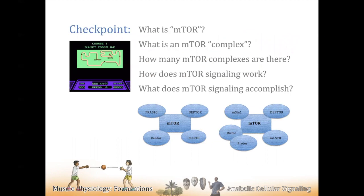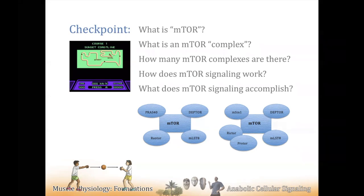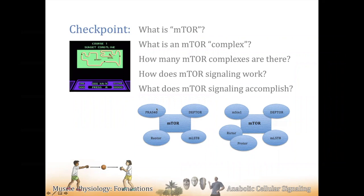What is mTOR? Well, mammalian target of rapamycin — it's a kinase. The mTOR enzyme is a kinase, but they exist in complexes. There's mTOR complex one, which contains raptor — regulatory associated protein of TOR — and that's only in complex one. Rictor — rapamycin-insensitive companion of TOR — is only in complex two. So rictor is a complex two protein, raptor is complex one, and we'll get into some of those differences today.